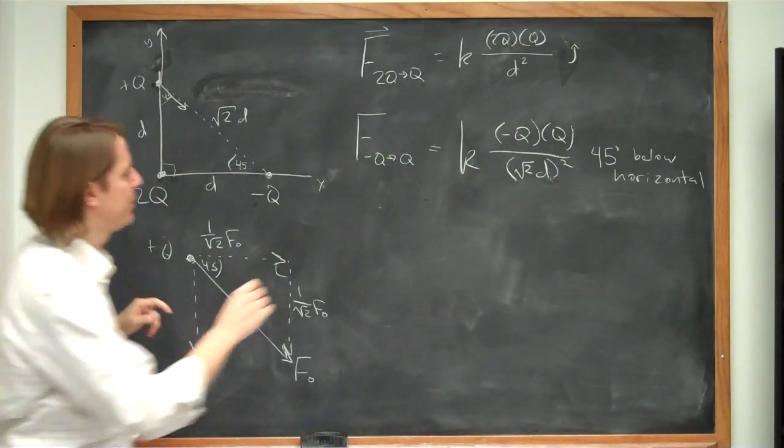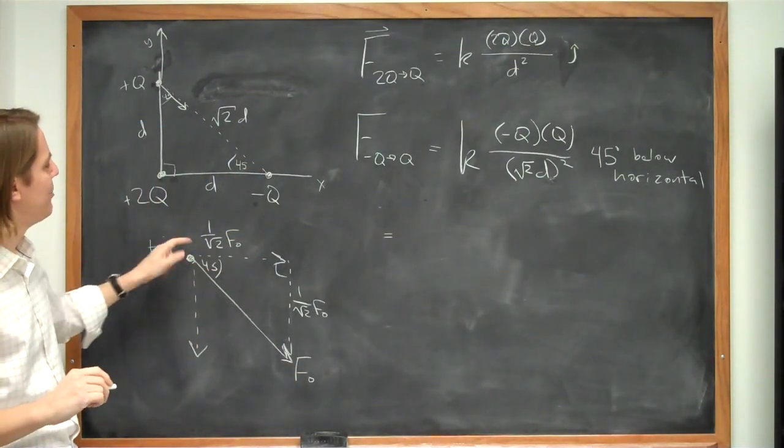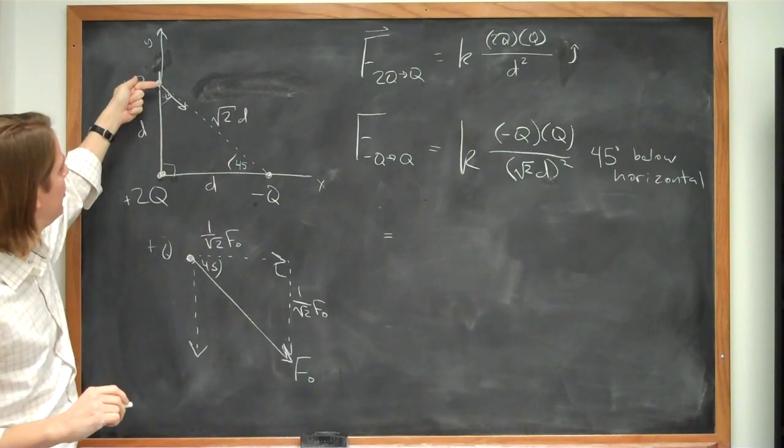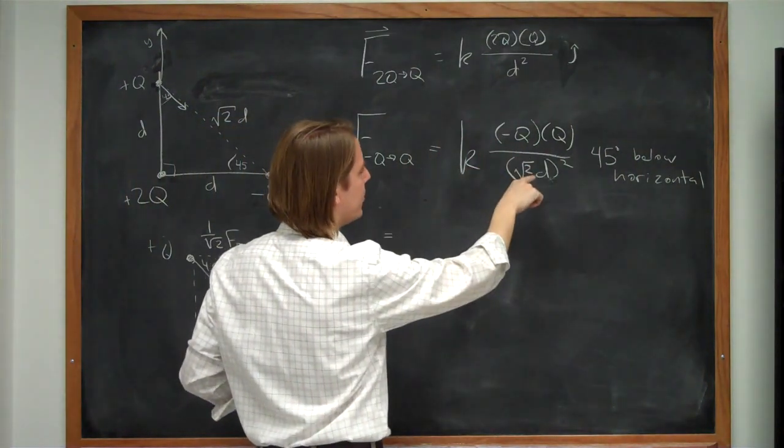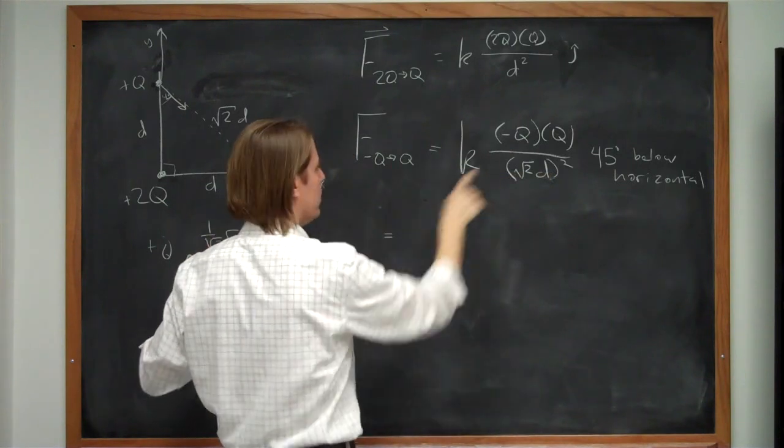But now let's think about the directions a little bit. If we want the x component, it's basically going to be positive 1 over the square root of 2 times the full magnitude. Because this is pulling in a positive x direction. So that would be what? Let's put all this together. That would be, this is squared to be 2.